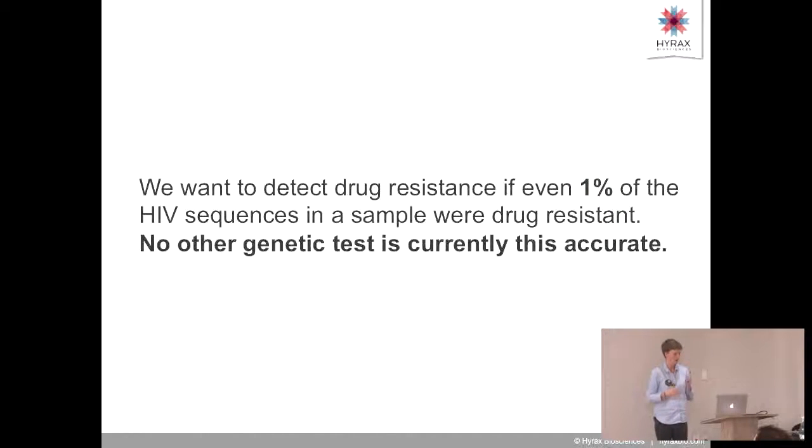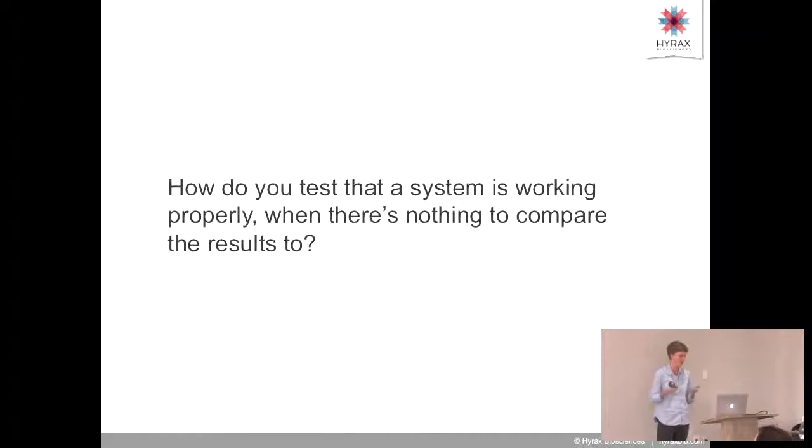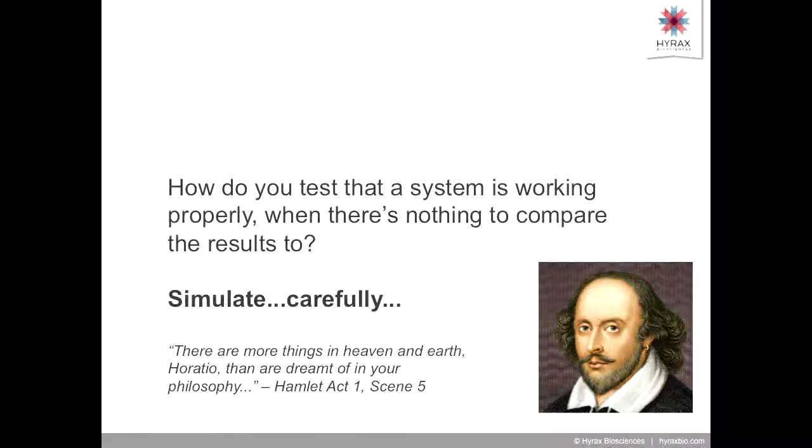There's a problem: currently no other genetic test is this accurate. We need to do it for HIV because if 1% of the HIV in your body is resistant and you take the drugs, that will quickly become the dominant strain. But we don't have anything to compare it to. This is a really complicated problem that comes up a lot in systems engineering. How do you test a system working properly when there's nothing to compare the results to? We can't just do another test and say our test's working. So immediately you might jump to simulate. You simulate a data set, have a known result, run it through, get the results. There's a caveat: simulate very, very carefully. The real world is messier than you can possibly imagine.